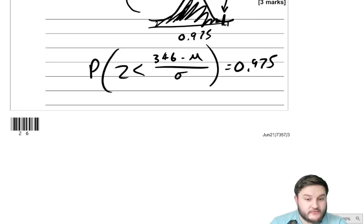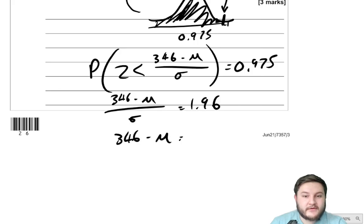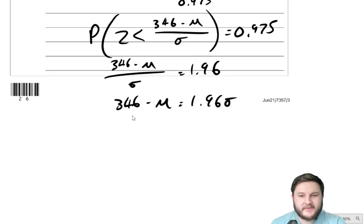So in other words, we get 346 take away mu over sigma is equal to 1.96. So 346 take away mu is equal to 1.96 sigma. And I believe, is that what they were asking for? There we go.